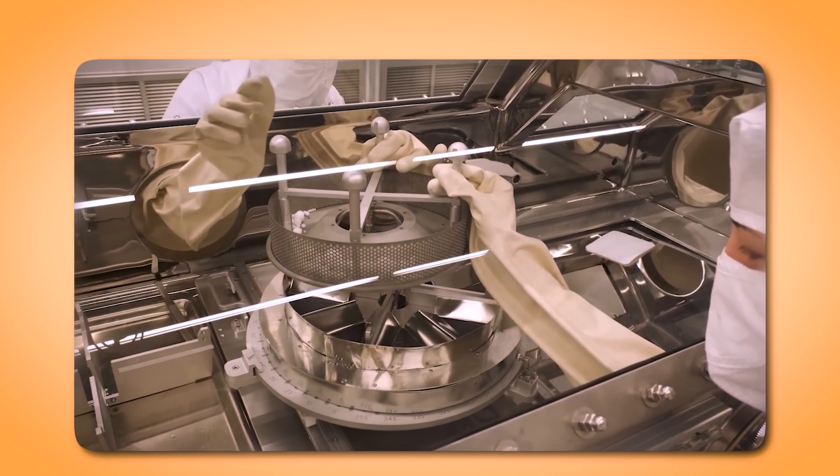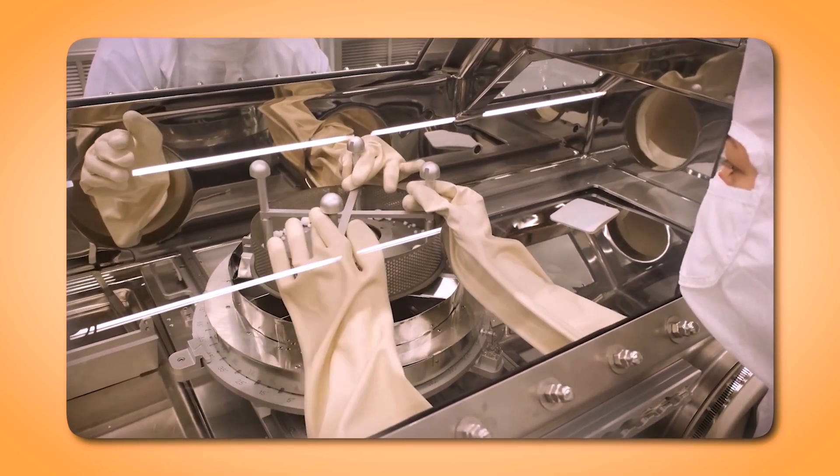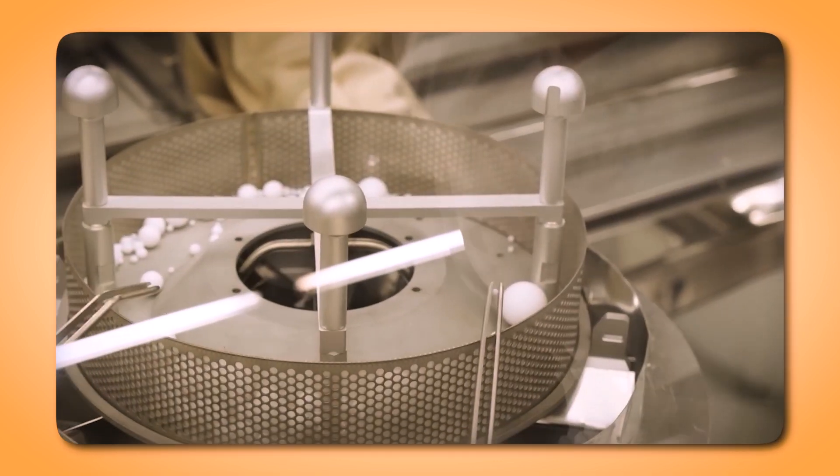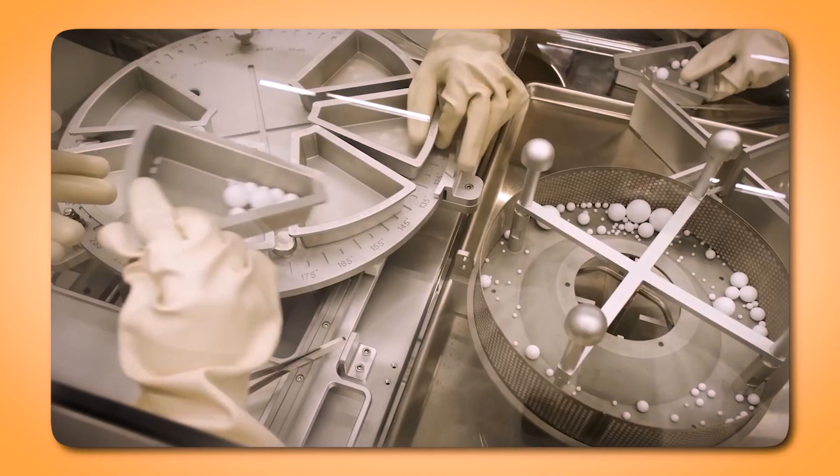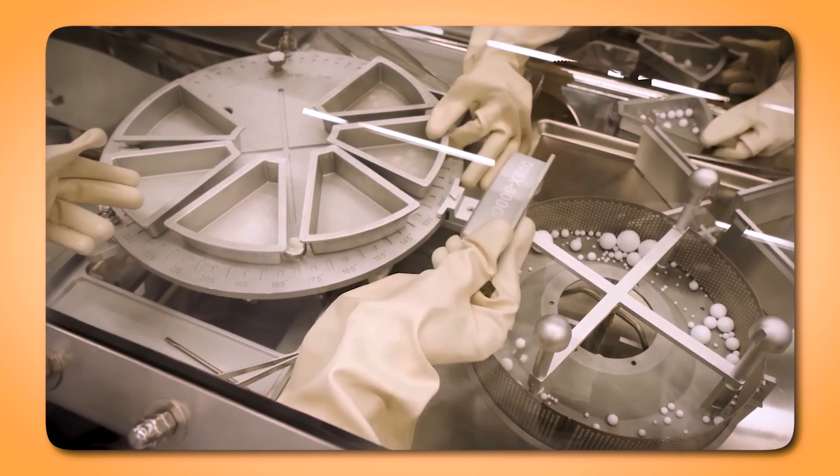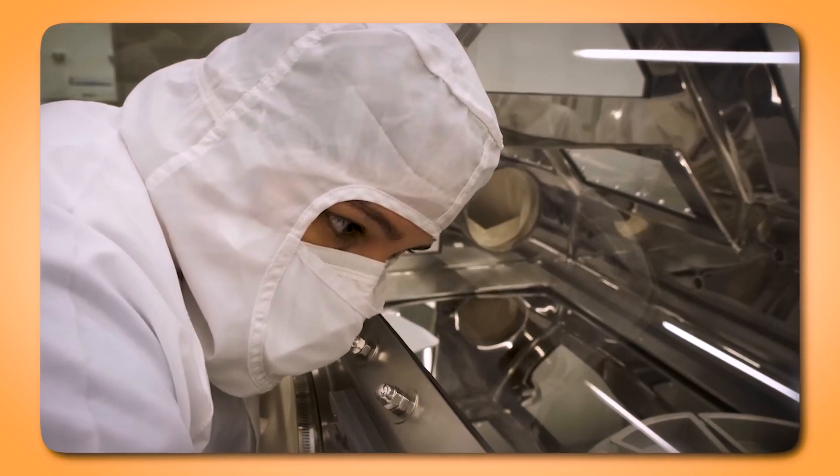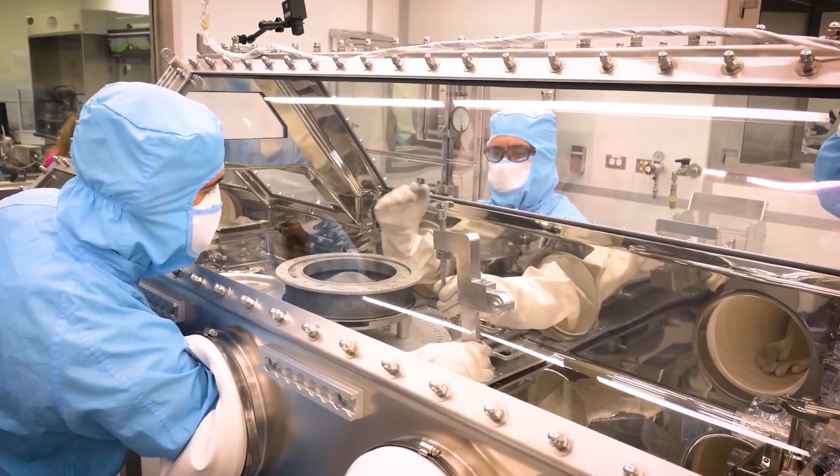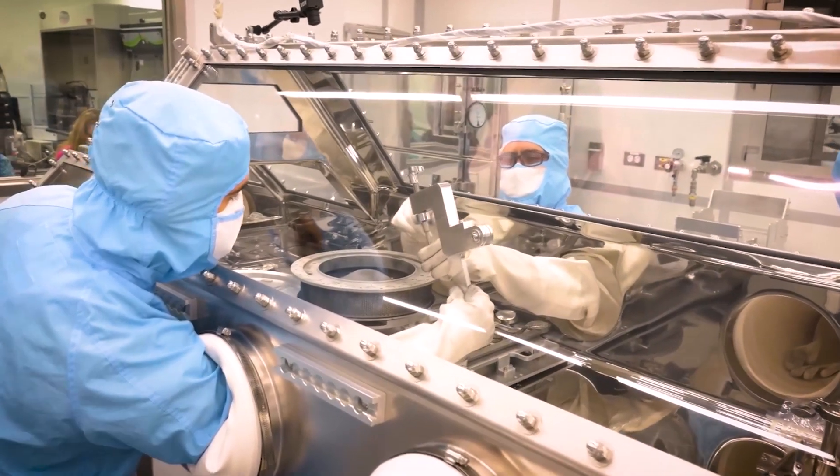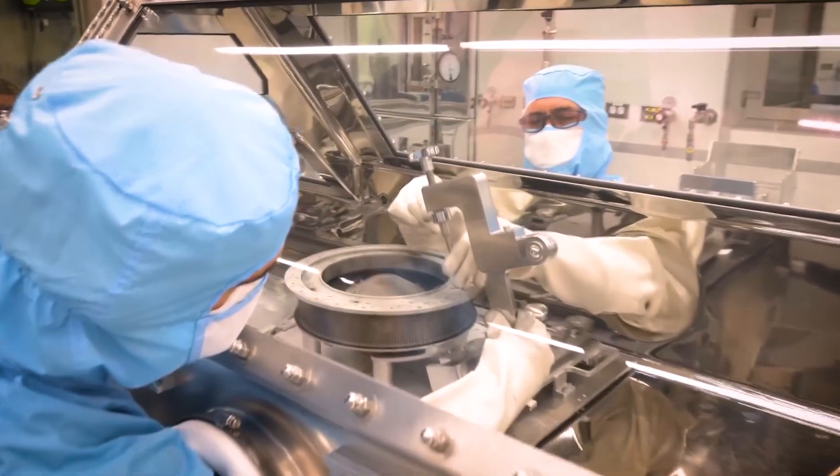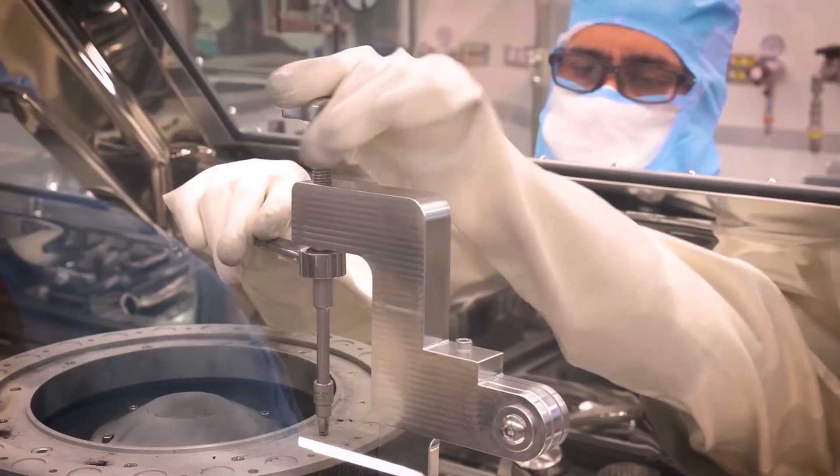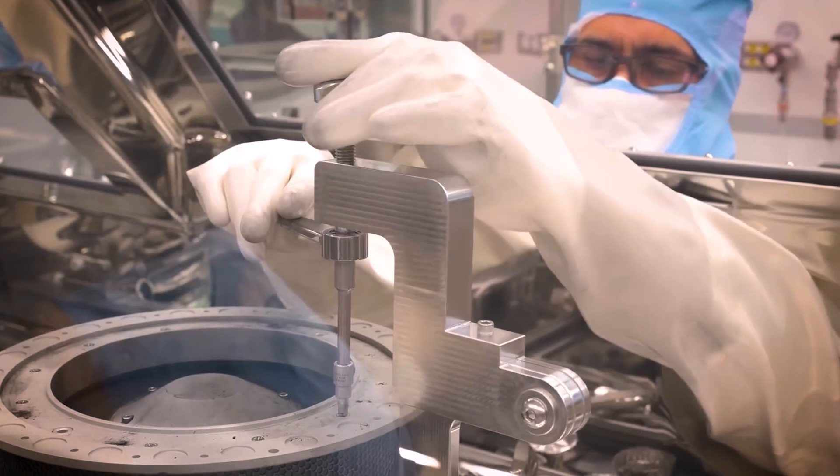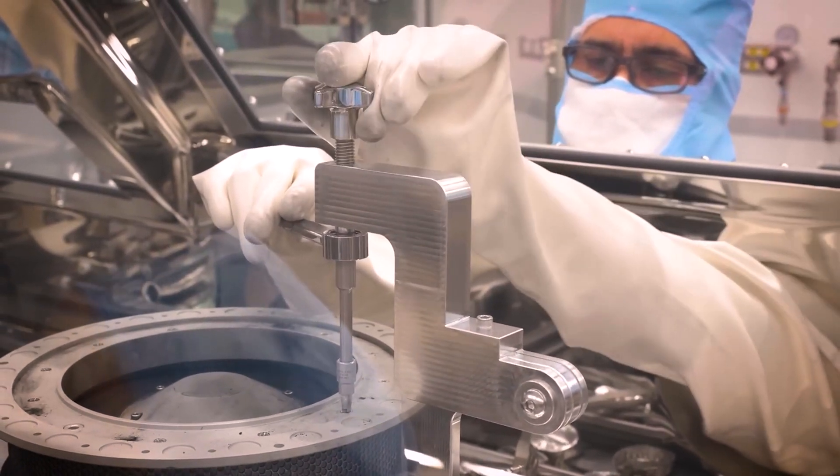Their efforts revealed an additional 51 grams of pristine Bennu material. When combined with the previously collected bonus rocks and dust, the total sample mass exceeded double the mission's original goal. This valuable material was carefully catalogued and divided into smaller samples. NASA has ensured that at least 70% of the Bennu material will remain preserved in pristine condition for future generations of scientists to study. Meanwhile, over 200 scientists worldwide are already beginning their research, analyzing these fragments of the ancient solar system.